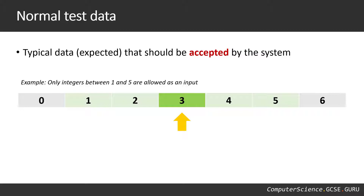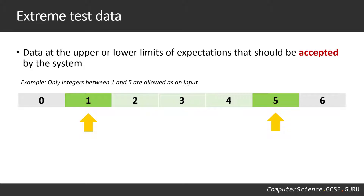Normal test data is typical, expected data that we expect should be accepted by the system. In this example, we're looking at a system that accepts integers between one and five. The accepted range — numbers one to five — are all perfectly fine and should be accepted. For normal test data, I would go straight down the middle, so number three would be the value I would use.